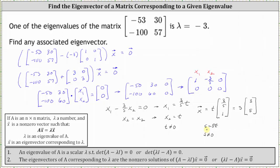Here we're only asked to give one eigenvector, so let's just let s equal one and give the eigenvector x as the vector three, five.